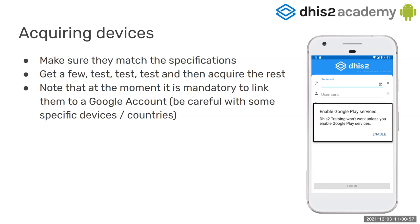Another thing we had to add recently: in the past, pretty much every Android device shipped from the factory contained Google services embedded. But because of a ban two years ago involving Huawei, some devices that don't contain Google services will not work with the application — you'll get a message saying DHIS2 doesn't work because you need Google Play Services. By default it won't impact you, but if you are thinking of acquiring Huawei devices, there are workarounds, but be aware. Test a small amount of devices first — don't find yourself with five hundred devices that do not work.